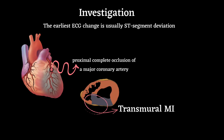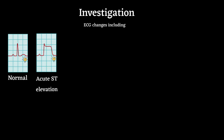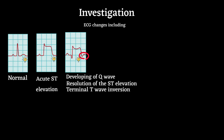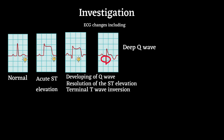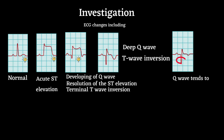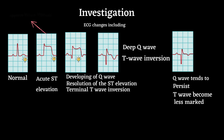The earliest ECG change is usually ST segment deviation — depression or elevation. With proximal complete occlusion of a major coronary artery causing transmural MI, there is a sequential evolution of ECG changes: acute ST elevation, progressive loss of the R-wave, developing T-wave inversion, resolution of the ST elevation, deep Q-wave and terminal T-wave inversion. In old or established infarct patterns, the Q-wave tends to persist but T-wave changes become less marked. The first stage appears within minutes, the second within hours, the third within days, and stage four after several weeks or months.